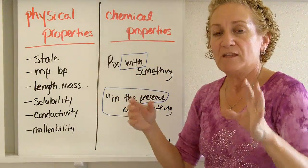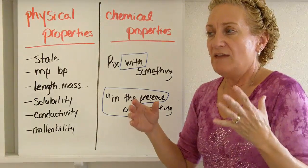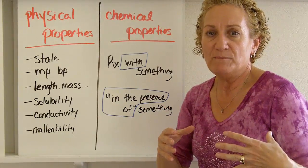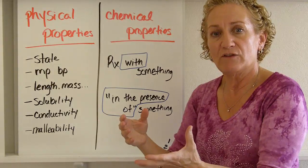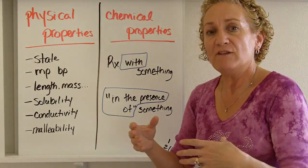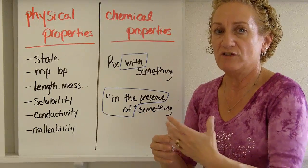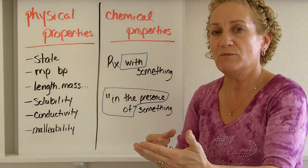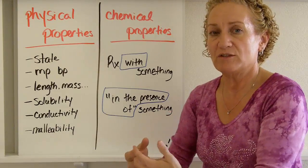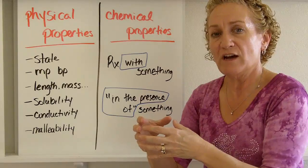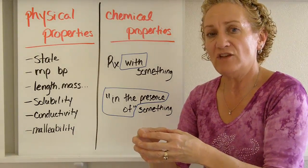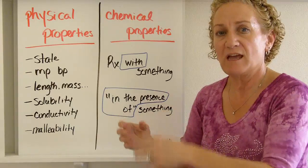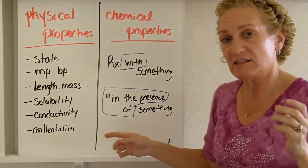Let's contrast that with chemical properties. We're going to use you as an example and talk about how you behave. You behave a certain way in a classroom, a different way with your parents, differently with your friends, and differently with your siblings — especially as a teenager, differently when parents are around versus when they're not. Depending on the environment, you behave a certain way, and that changes with the environment. That's what a chemical property is.